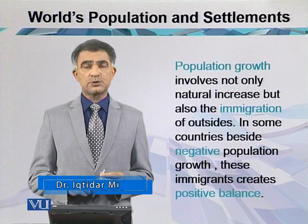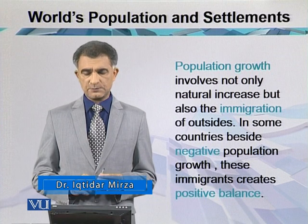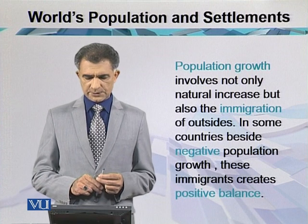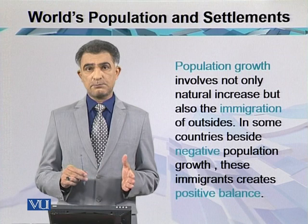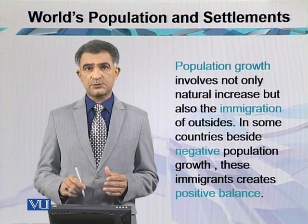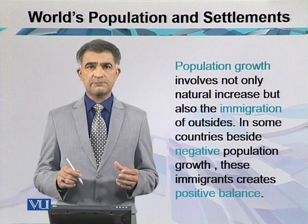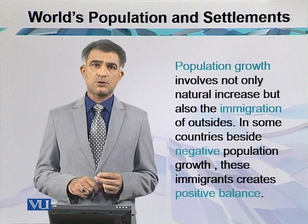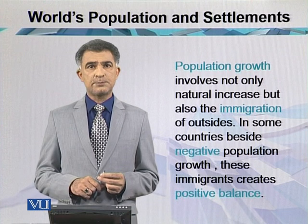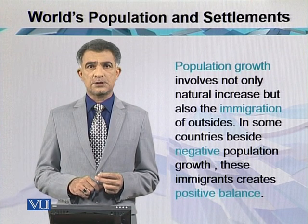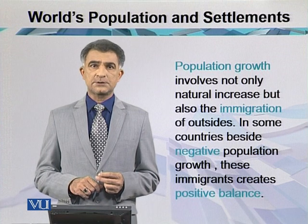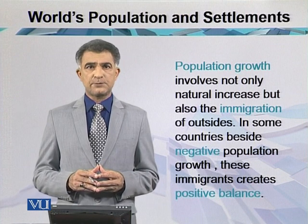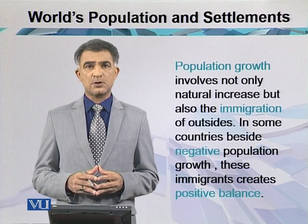Population growth involves not only natural increase but also immigration from outside. In some countries, beside negative population growth, these immigrants create a positive population balance. The best examples are the USA and the Western European nations, where most of the workers or youth belong to developing economies — like countries in Asia, Africa, and the southern part of America. These people are called immigrants.